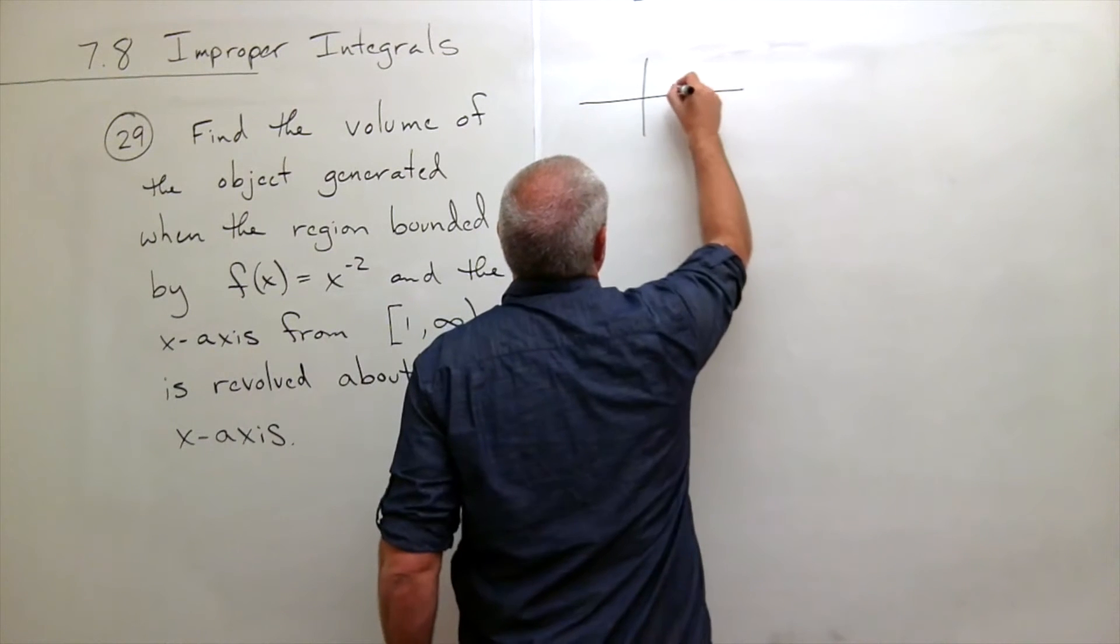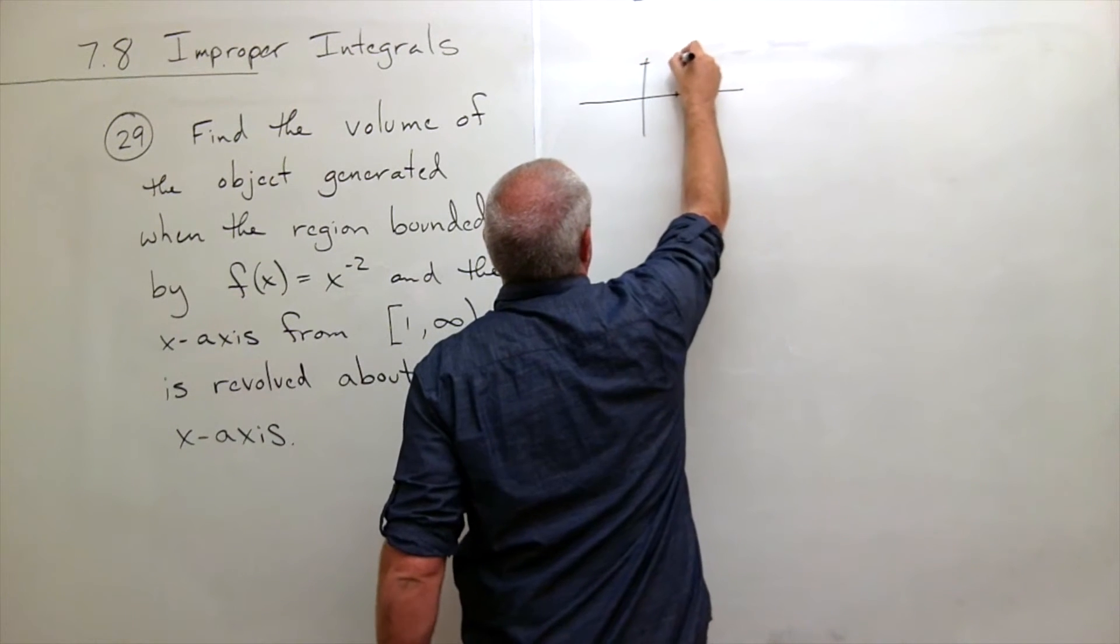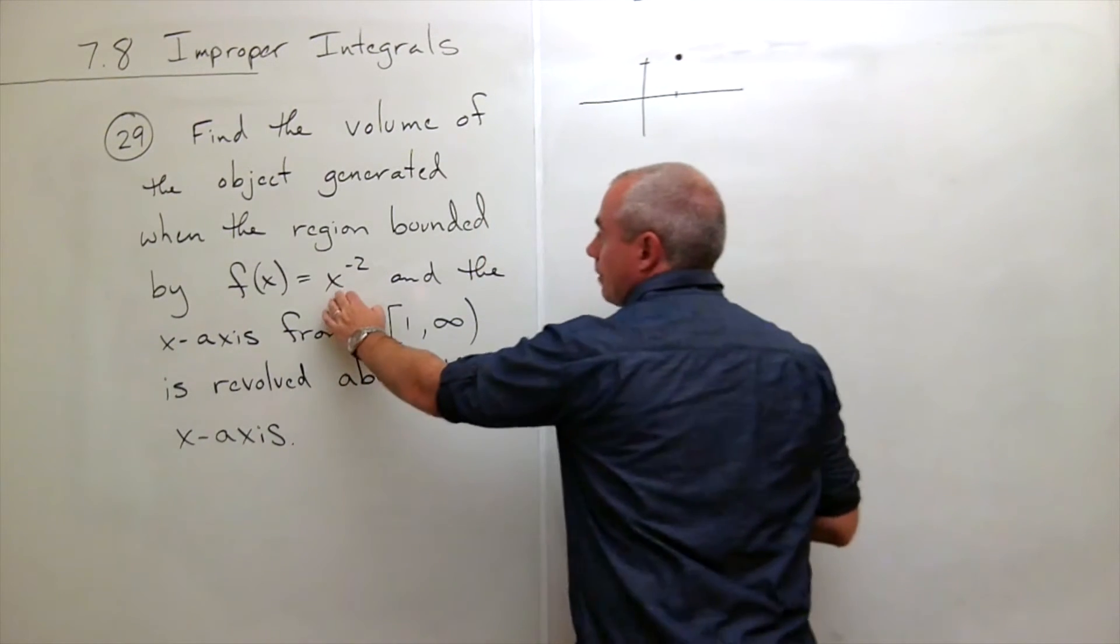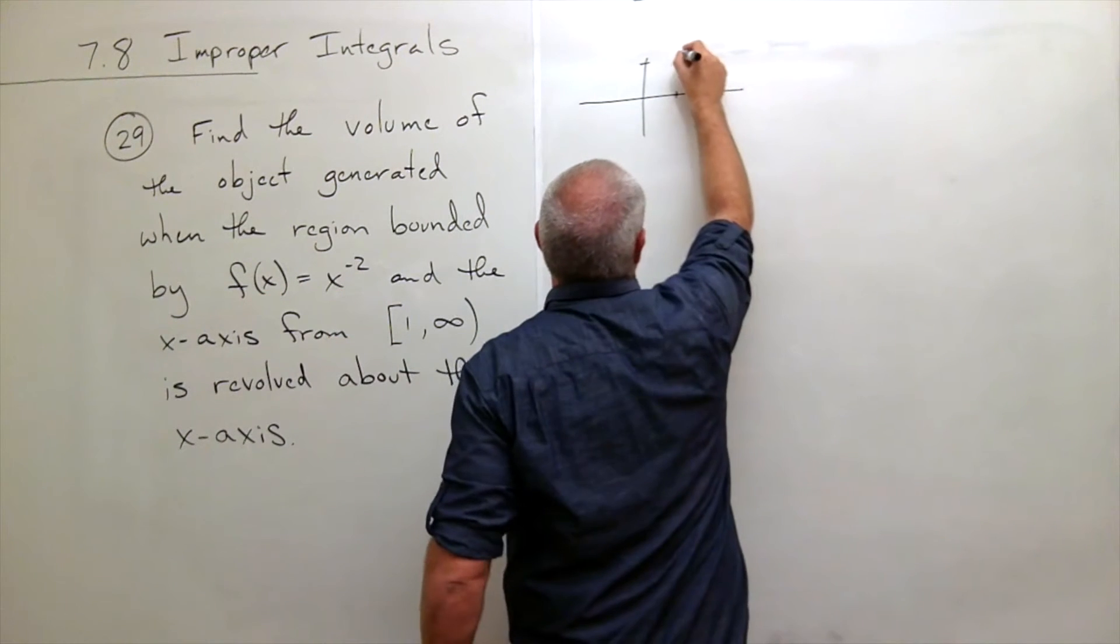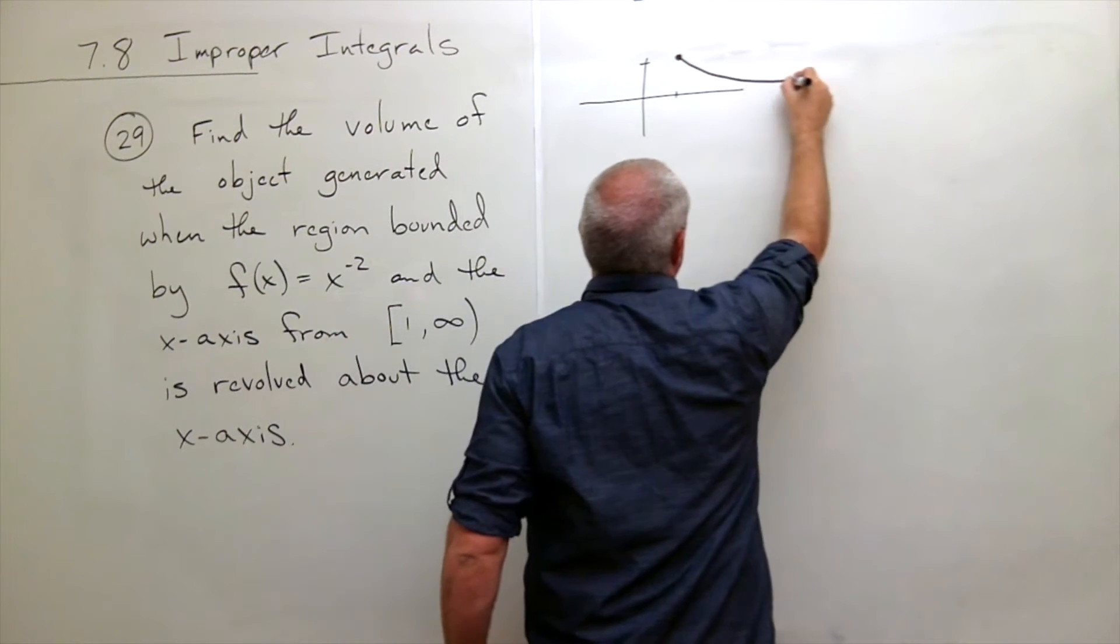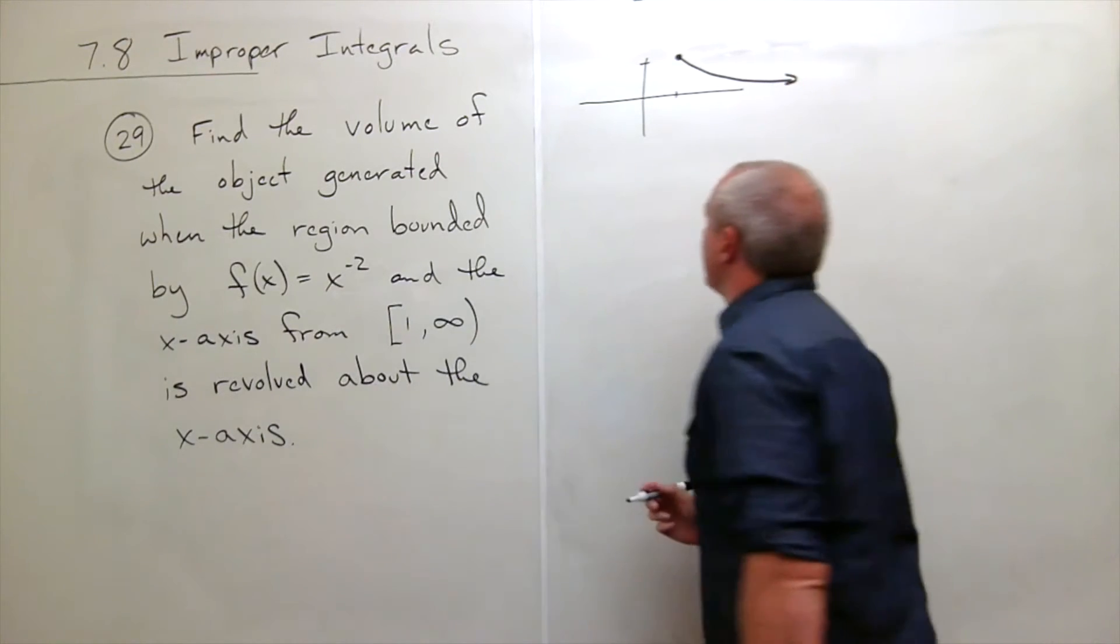this thing is 1. So, at 1, this is 1, and as this number gets bigger, then f of x gets smaller, and it's still positive, but it's going down towards 0.